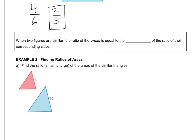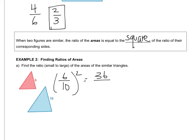The other cool thing about similar figures is that when you want to find the ratio of their areas, it equals the square of the ratio of their corresponding side lengths. So if you know the ratio between the side lengths, squaring that ratio gives you the relationship between the areas. For example, if the relationship between the side lengths is 6 over 10, squaring that gives you 36 over 100.